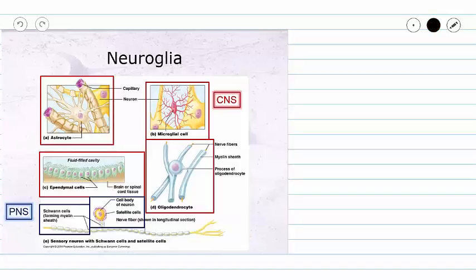We have six different types of neuroglia. Four of those types are found in the central nervous system, while two of those types are found in the peripheral nervous system. So not only are we going to learn the names and the functions of these neuroglia, or glial cells, but we are going to learn their locations as well.